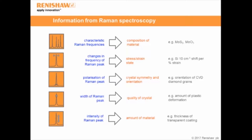The width of the Raman peak is a good indicator of quality of crystal or sample uniformity. In an ideal world, all the molecules or atoms would have equal spacing, and as a result the Raman band would be infinitely sharp. In reality, we do our measurements at room temperature, so there's some broadening as a result of the Boltzmann distribution that the material sees, and this gives us a finite width. But if we start to add defects to our material, or expose it to different stresses and strains, we'll see this peak broaden, and we can use this to gauge the amount of plastic deformation in the material.